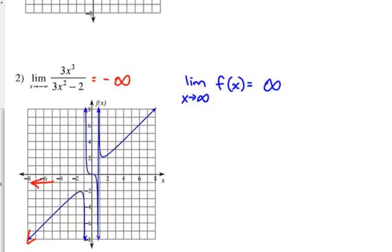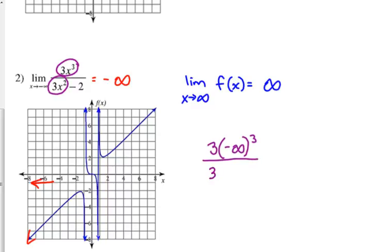Now, if we didn't have the graph, how would we figure this out without a calculator? If you remember back to pre-calc, we talked about end behavior of these functions — the power left and the power right. It's dictated by the greatest powers in your function. So really, all we're focused on is the 3x cubed in the numerator and the 3x squared in the denominator. So we can plug in negative infinity — we're not actually going to get a number, but it will give us a concept of whether we're talking about positive or negative infinity or some other number.